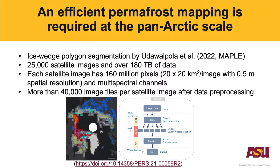However, we propose that a more efficient permafrost mapping approach is required at the pan-arctic scale. Taking the MAPL work as an example, the authors need to deal with 25,000 satellite images with over 180 terabytes of data. Each satellite image has 160 million pixels with multispectral channels. In order to process the image on the GPU due to limited memory, the authors need to split each image into more than 40,000 image tiles. So even with a powerful workstation or HPC, it can still take lots of time to process the data.